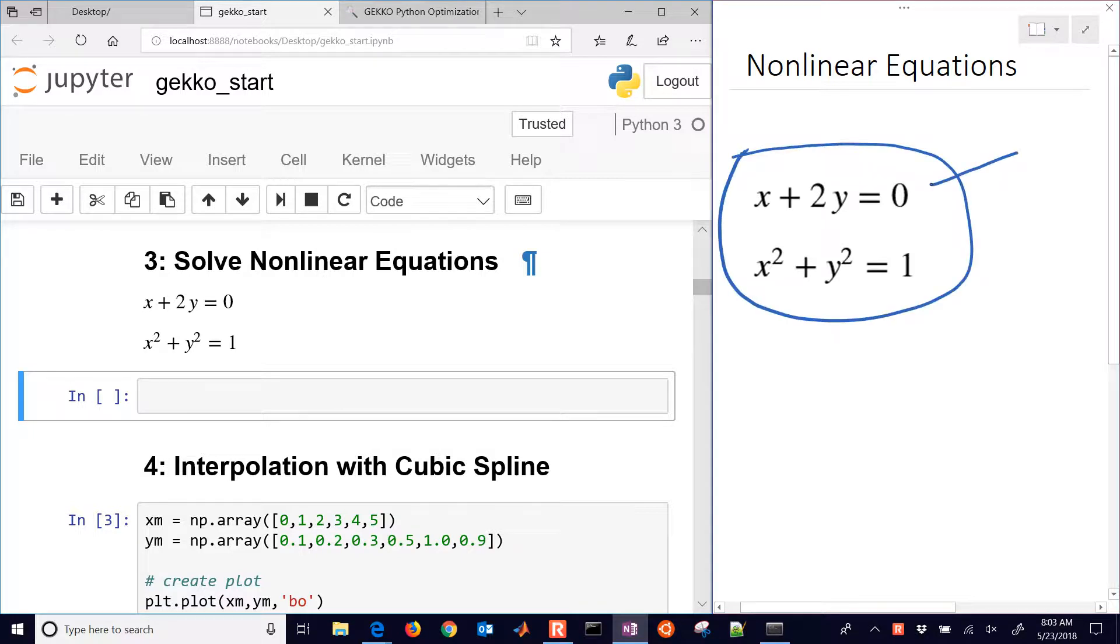The first one is linear, and the second one is going to be nonlinear. This second one is the equation of a circle, a unit circle.